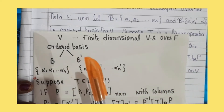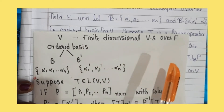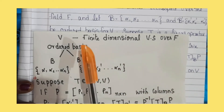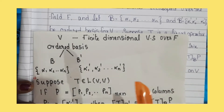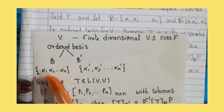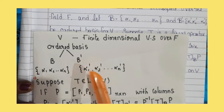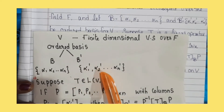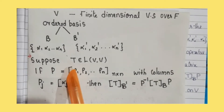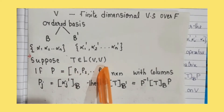Let V be a finite dimensional vector space over F. The ordered basis B is the set {alpha 1, alpha 2, ..., alpha n} and B' is the set {alpha 1', alpha 2', ..., alpha n'}. Suppose T belongs to L(V, V), that is T is a linear transformation from V to V.